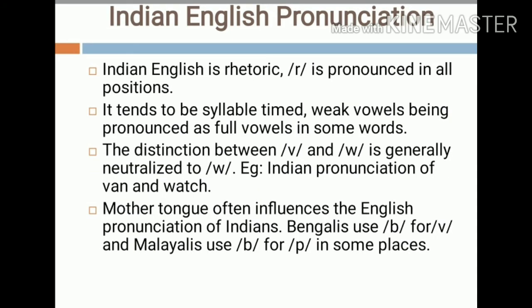In the case of Indian English pronunciation, Indian English is rhotic — meaning R is pronounced in all positions. Indian English speakers don't follow the British rule of omitting R. Another important speciality is that Indian English tends to be syllable-timed, with weak vowels being pronounced as full vowels. Indian English speakers generally don't distinguish between weak and strong vowels. Another feature is that the distinction between the sounds V and W is generally neutralized to W — so Indian English speakers pronounce the words spelled V-A-N and W-A-T-C-H as 'van' and 'watch' similarly.